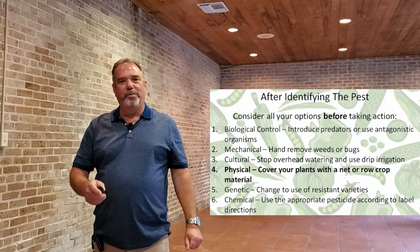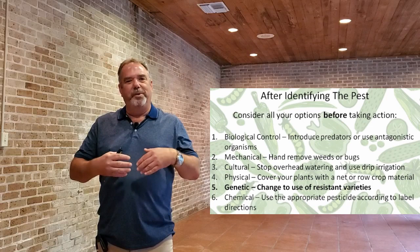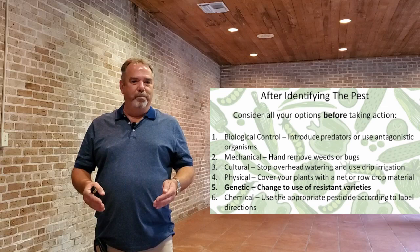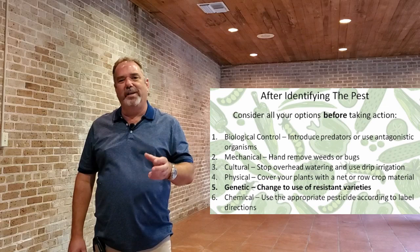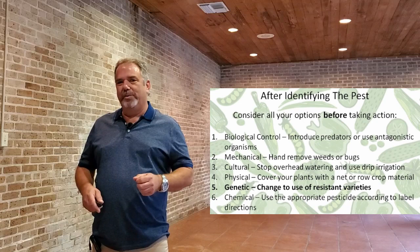There are also genetic options. When collecting seeds — something horticulturists have done throughout the ages — they would select plants with the traits they wanted, the ones less fed on by insects. Throughout the centuries we've come up with pest-resistant varieties of vegetables and plants that we can use. Then there's chemical control, which is the use of appropriate pesticides according to label directions. This could be something as inert as horticultural spray oil or insecticidal soap — these are all still pesticides and need to be used according to label directions.